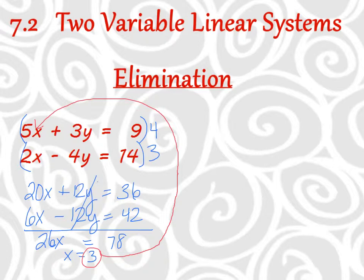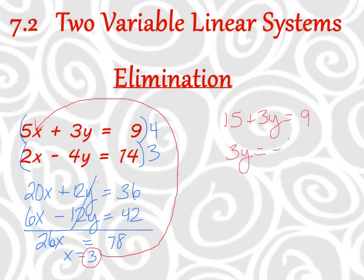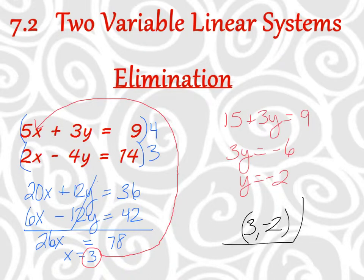x is 3, so I end up with 5 times 3, which is 15, plus 3y equals 9. Solving for y: subtract the 15 to the other side, so y is negative 2. Our ordered pair — the point where those two lines intersect — is (3, −2). That's the solution to that system, and it's the x and y value I could plug into both equations and they would both work out.